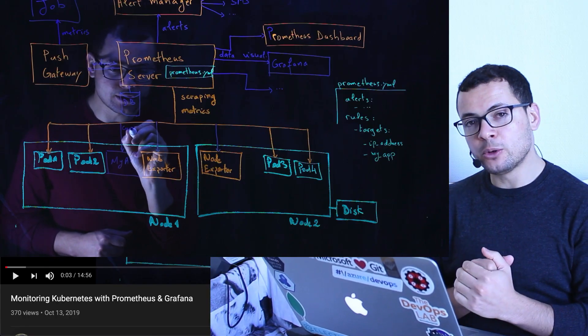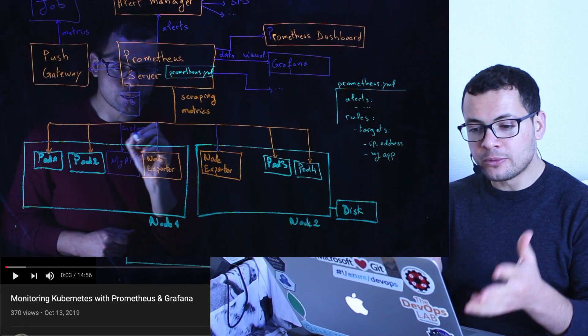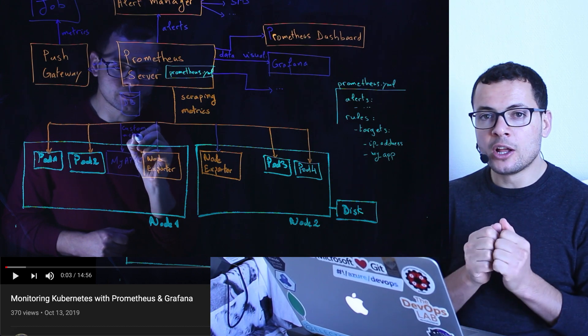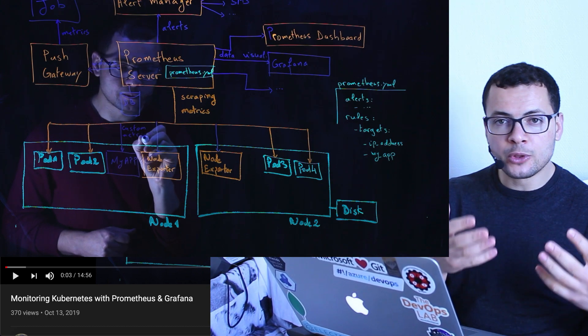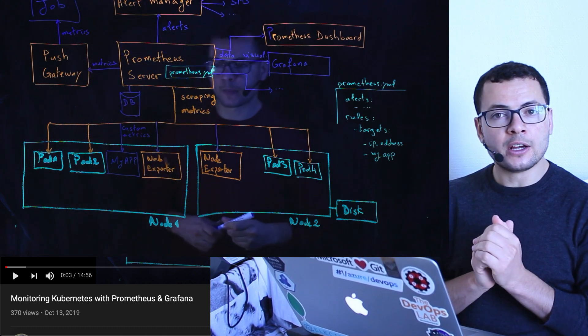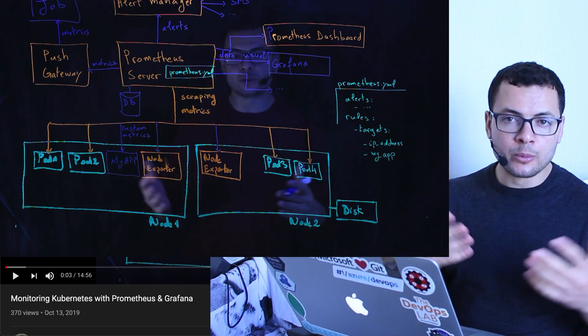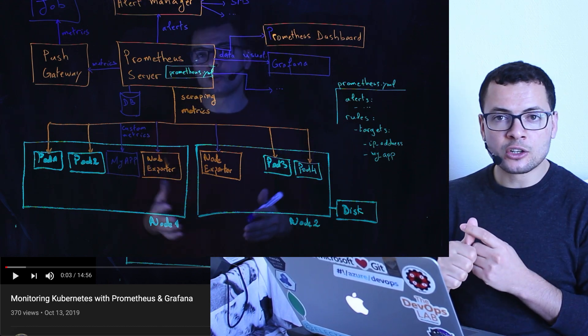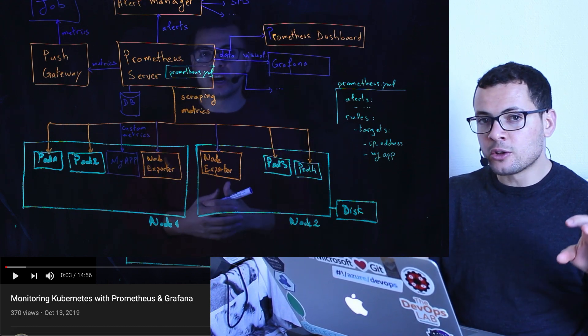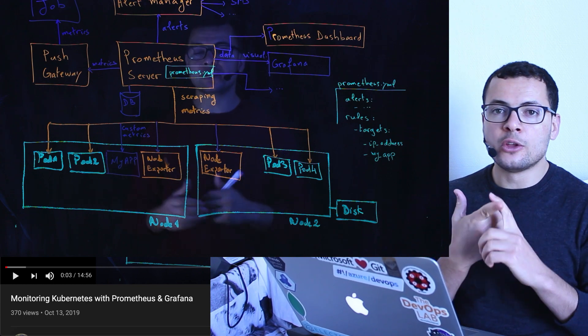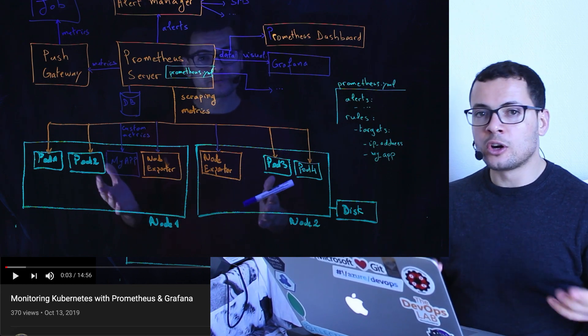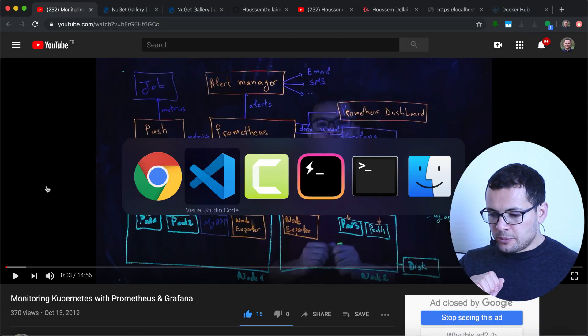Then we'll view those metrics in a dashboard using Grafana. I hope you have already watched my introductory videos that show how Prometheus works, how it can scrape metrics from the Kubernetes cluster — whether those are the nodes, the Docker containers, the pods, or the jobs.